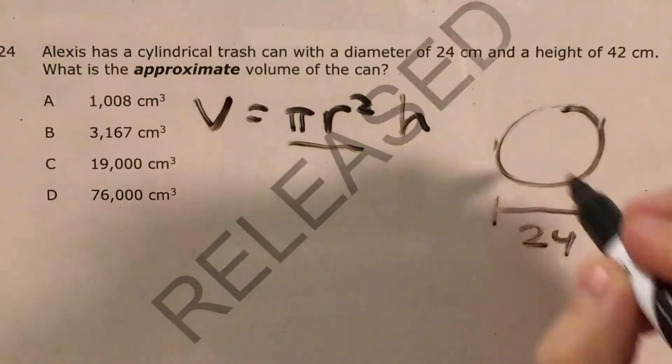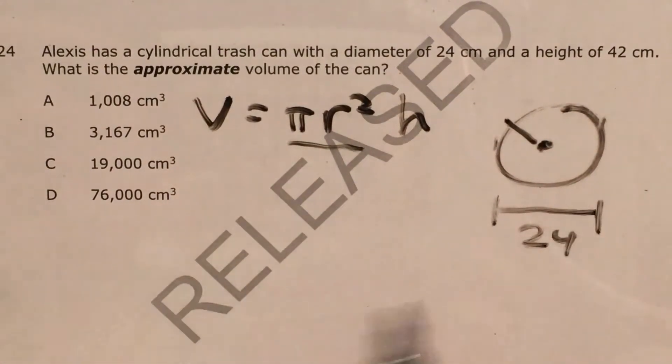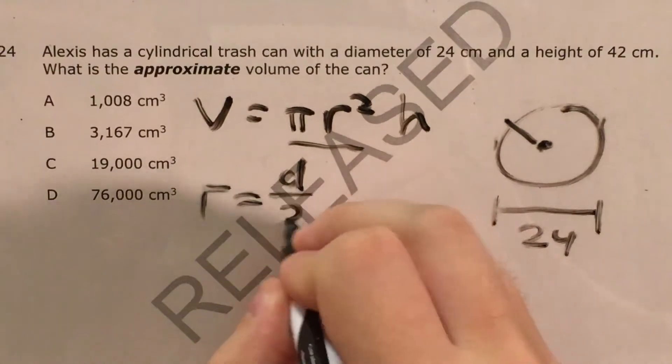Diameter is all the way across. Radius is halfway across. So what that tells me is that I'm going to need to use another quick formula, that radius equals the diameter divided by 2.